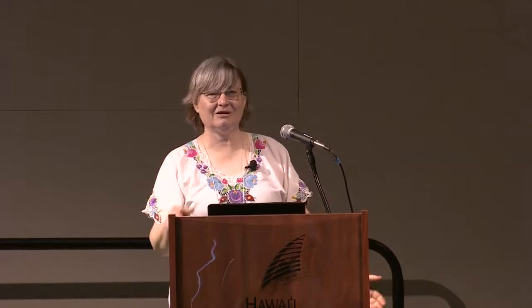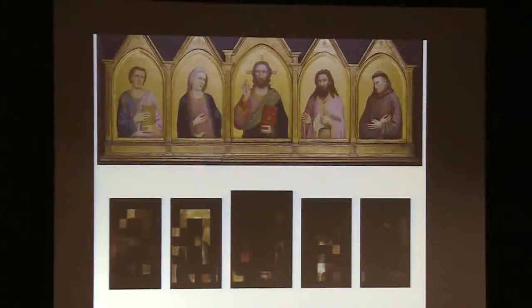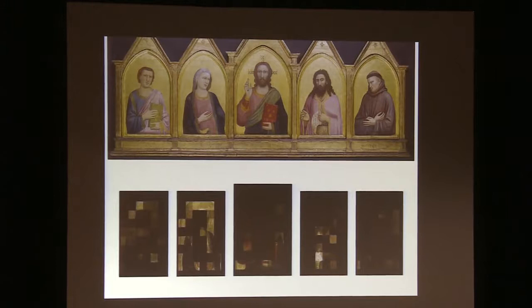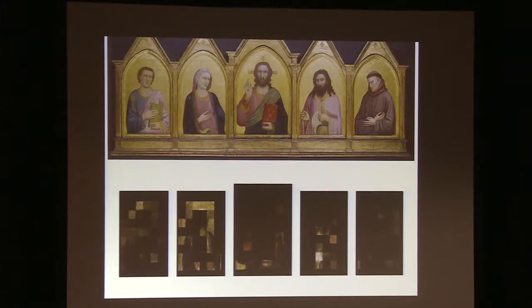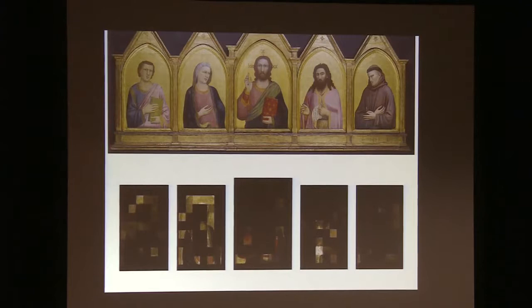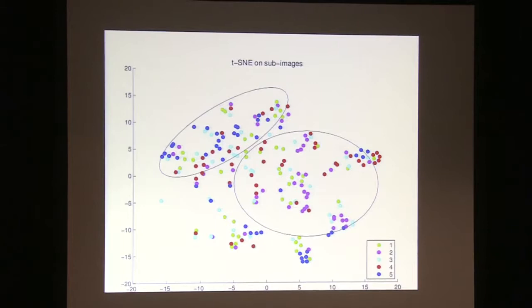We did a sophisticated machine learning analysis, identifying features, then finding which features usually came together — like a topic analysis. We identified the equivalent of words in a text, then saw which words came together in topics — about 20 topics total. We visualize each topic by showing patches where it's very pronounced, with intensity proportional to how pronounced it is. You start seeing clustering of the different paintings.